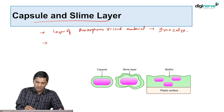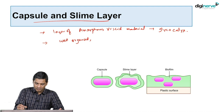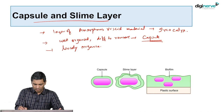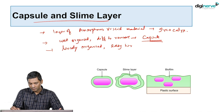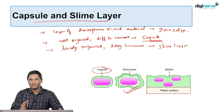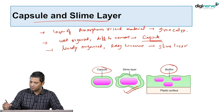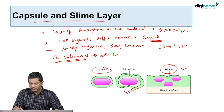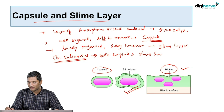If the glycocalyx material is loosely organized and easy to remove, then it is called the slime layer. There is a third variety called biofilm, which will be discussed later. There is an organism called Streptococcus salivarius which contains both capsule and slime layer — this is a common MCQ: which organism has both capsule and slime layer? The answer is Streptococcus salivarius.